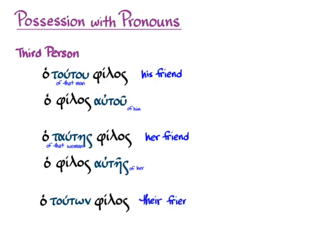Ho toutou philos can also mean 'the friend of those people,' so 'their friend,' because we deal with third person plural as well. Or in the predicate version, ho philos auton — 'their friend.' So that covers the regular first, second, and third person options for possession.